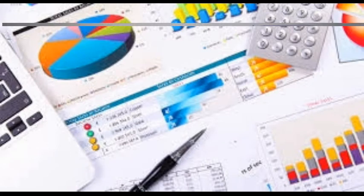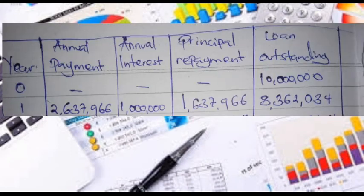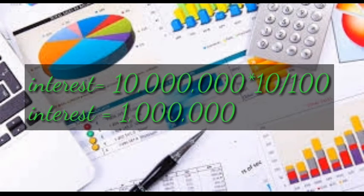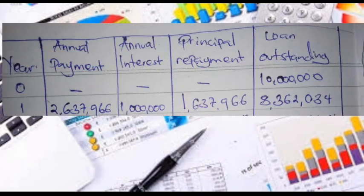In year one, the annual payment is the equal installment we calculated — 2,637,966 shillings. For the annual interest, we had an interest rate of 10 percent in our question, so we calculate 10 percent of 10 million, which equals 1 million. So our annual interest for year one is 1 million shillings.